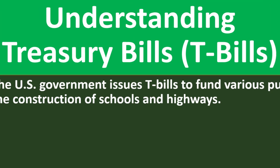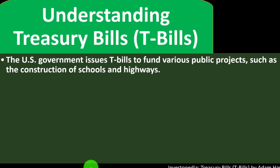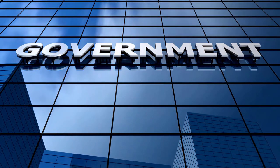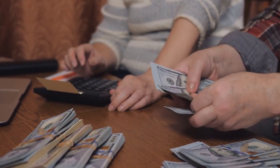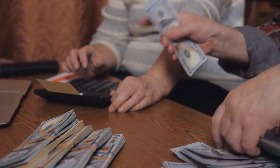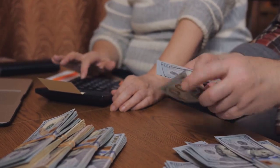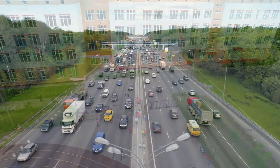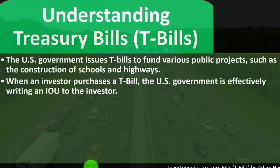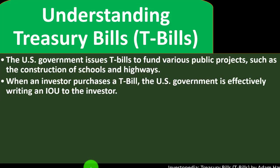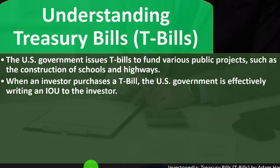Understanding Treasury Bills: the U.S. government issues T-bills to fund various public projects such as the construction of schools and highways. So you're basically loaning money to the government in exchange for the Treasury Bill. If you're buying the Treasury Bill directly from the government, then the government is receiving money that they can use for various projects. When an investor purchases a T-bill, the U.S. government is effectively writing an IOU to the investor.